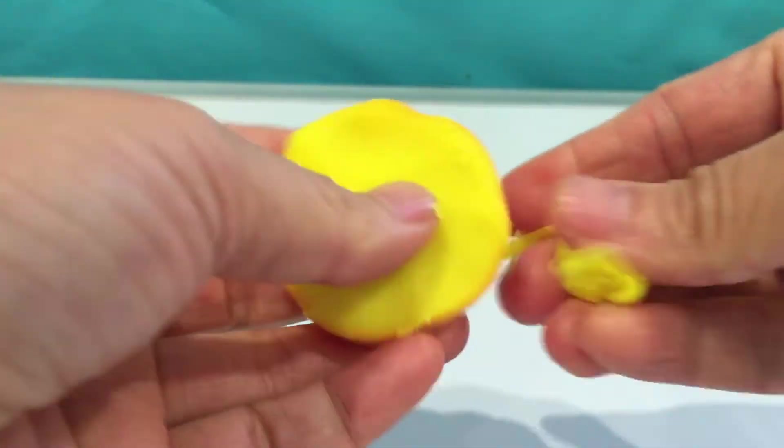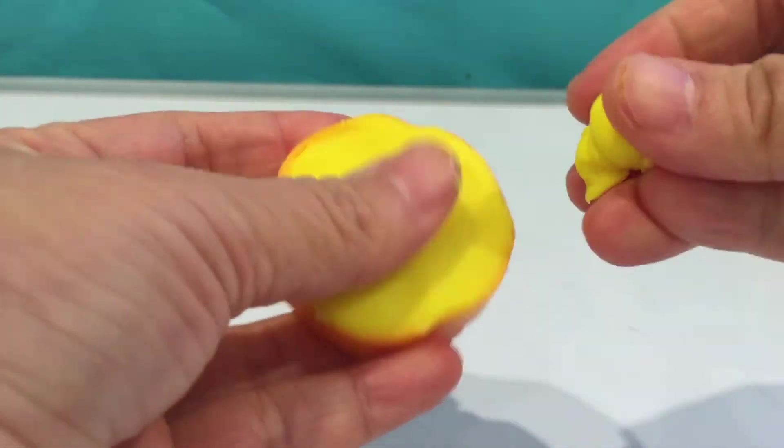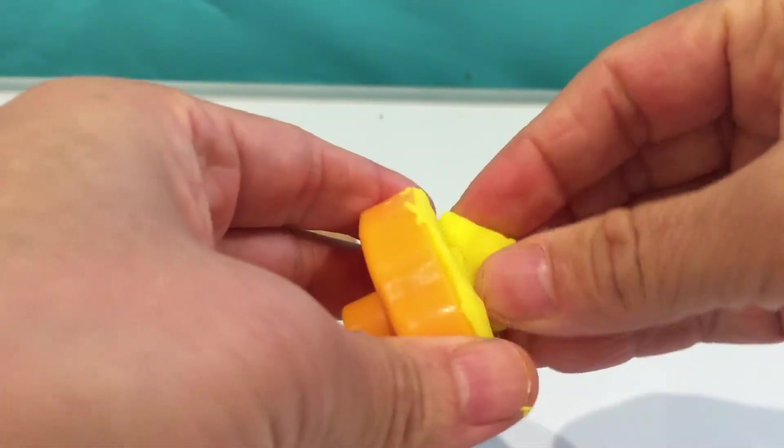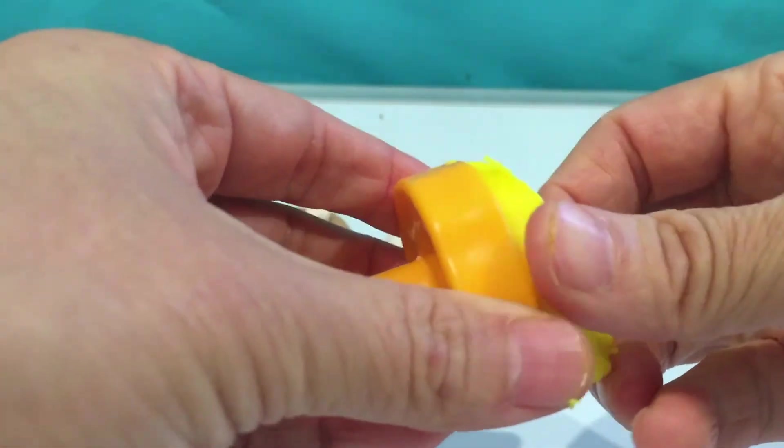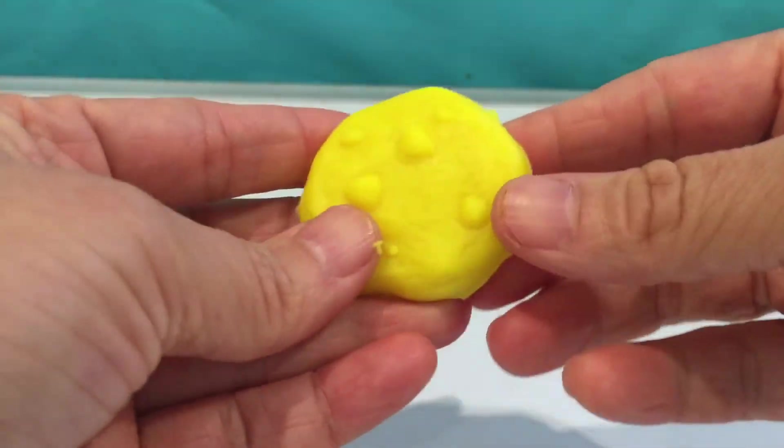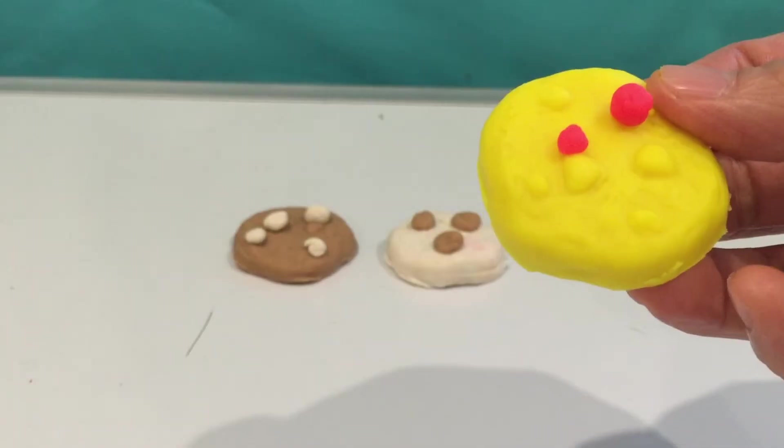With the yellow color, I'm going to make a vanilla flavor biscuit with strawberry candies on the top. Looks really cute.